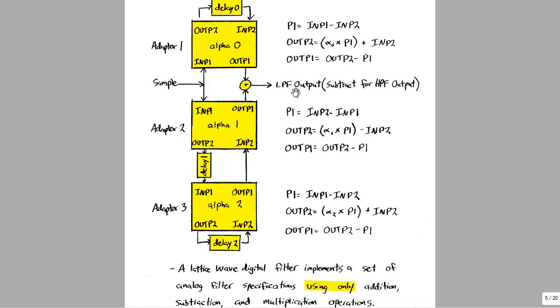At the output you get two output variables: out p1 from adapter zero and out p1 from adapter one. If you sum these together, that's a low pass filter output. You can also subtract these outputs to get a high pass filter output with the same exact design equations. This will be very helpful when doing the lab.